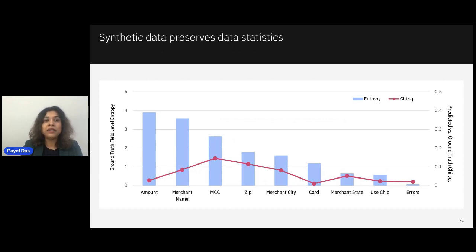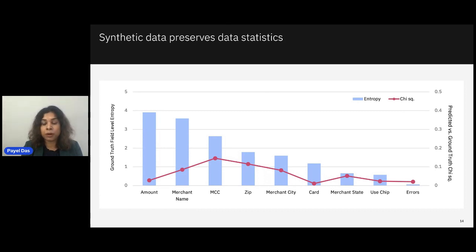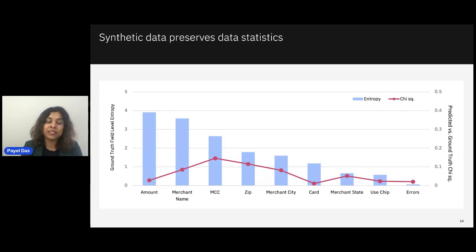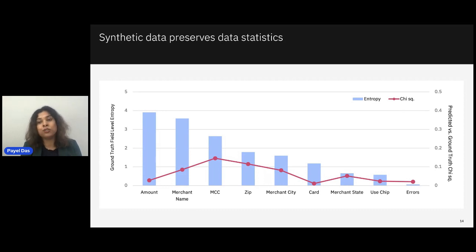This chart shows the fidelity of the synthetic data using the chi-square distance between the generated distribution and the training distribution across different features. Interestingly, for a specific user, our TAP-former model — presented at ICASP earlier this year — shows conservation in features like amount, card, and chip usage, while showing more variation in merchant name and chip. This is realistic because for a specific user we would expect conservation in spending amounts and cards used, while merchant name and chip can show more variance.